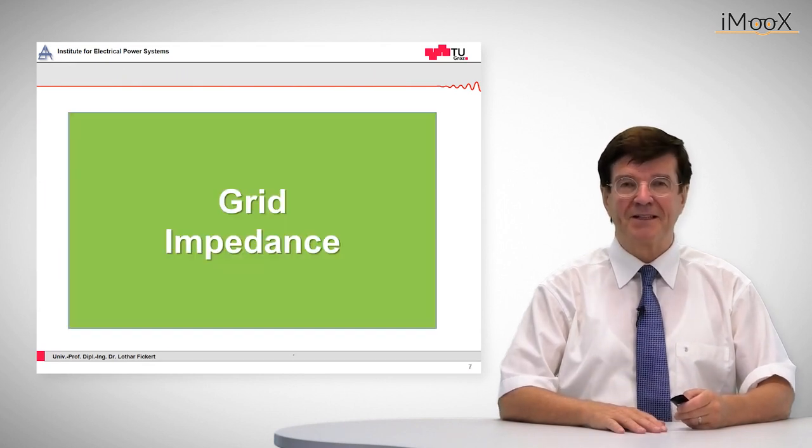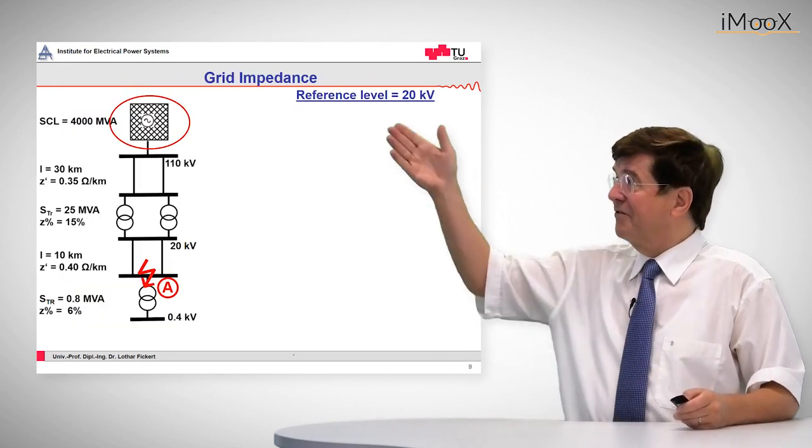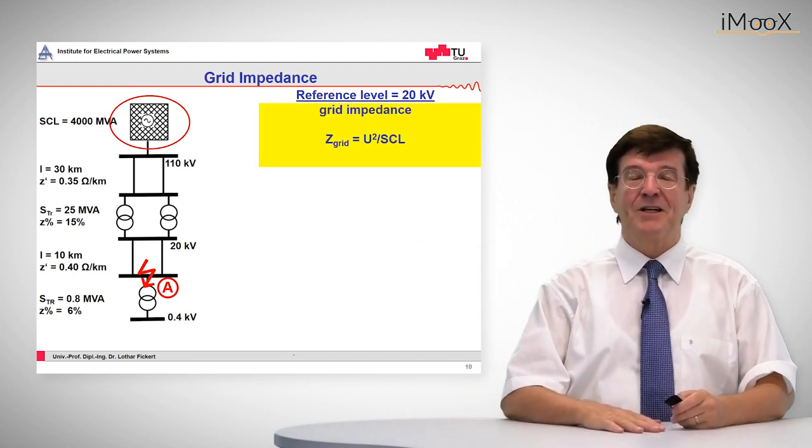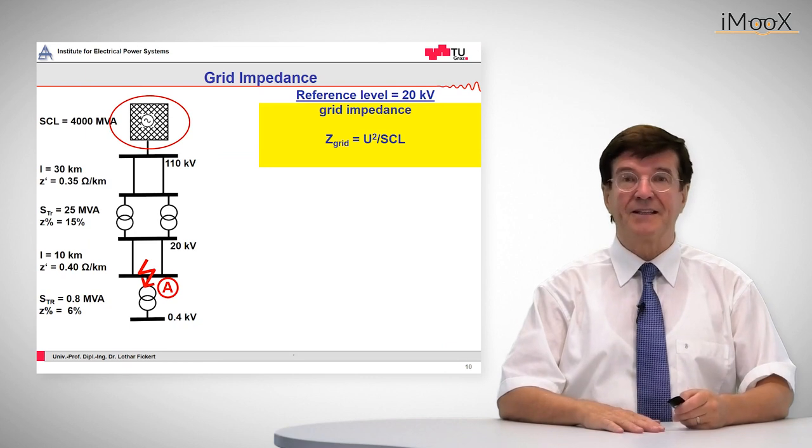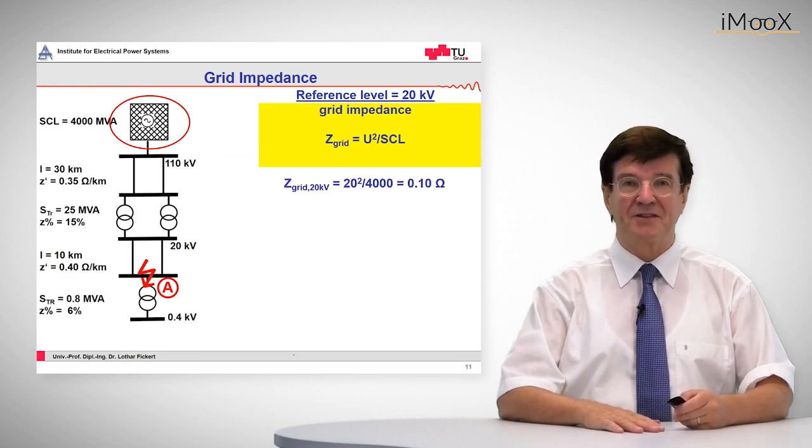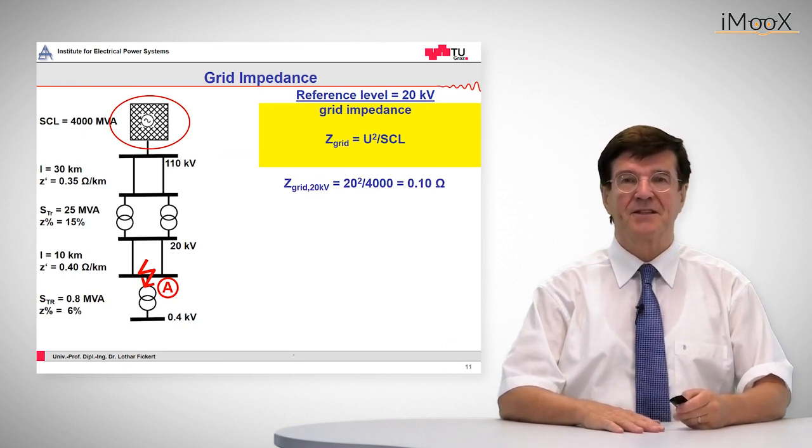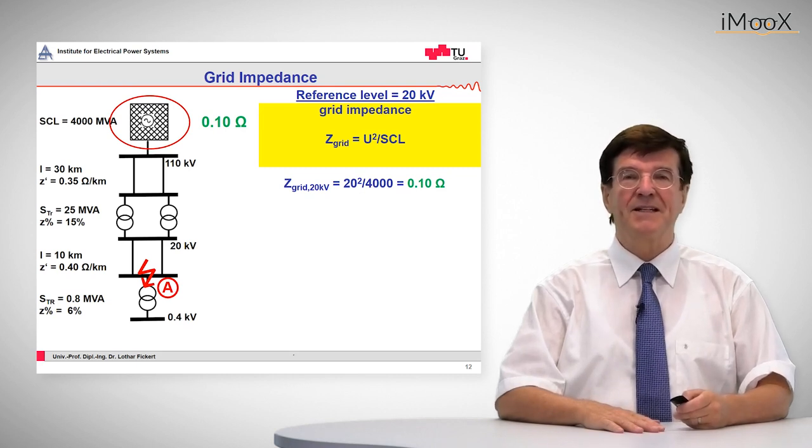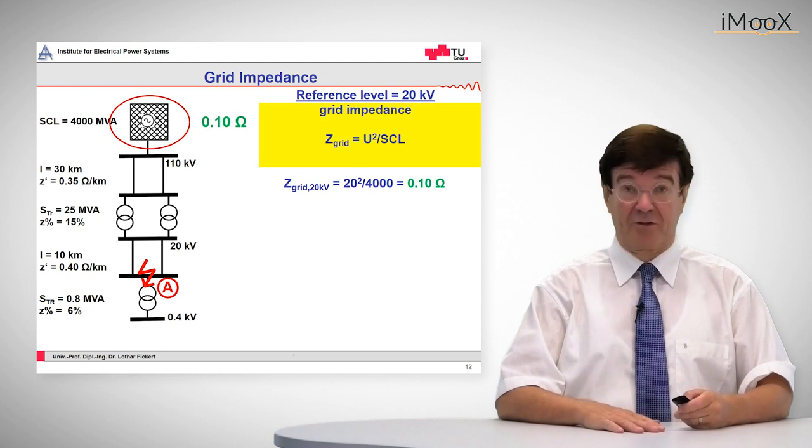Let's start with the grid impedance. The grid impedance is given by the following formula: it is U squared divided by the short circuit level, and in this case we obtain a value of 0.10 ohms. So these 0.10 ohms are the result for the grid impedance on the 20 kV voltage level.